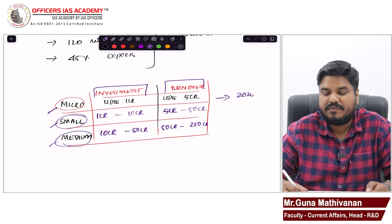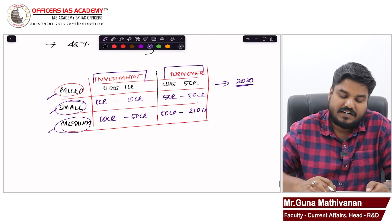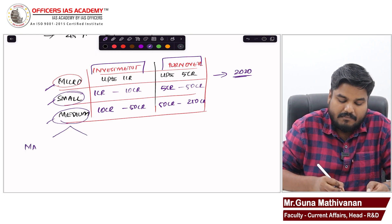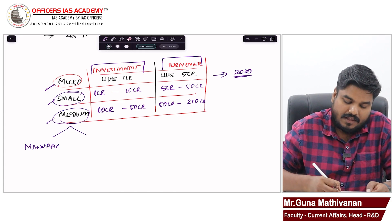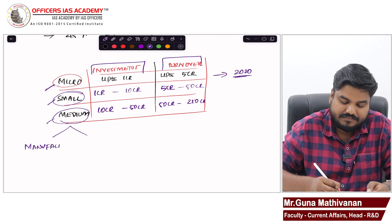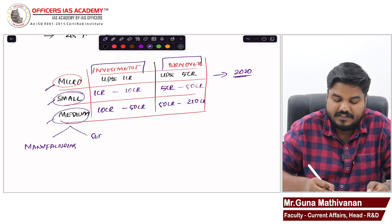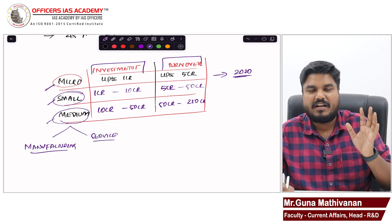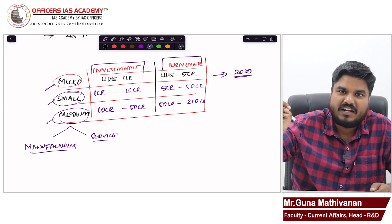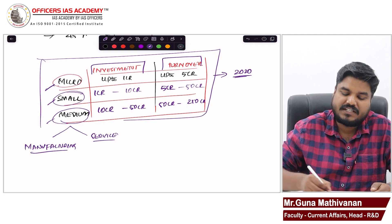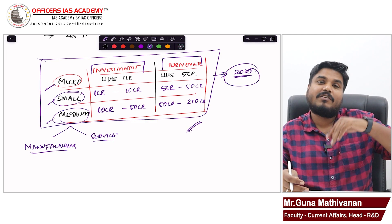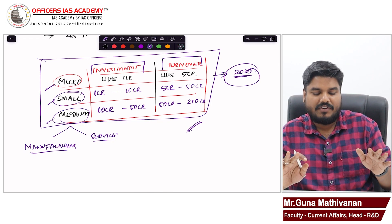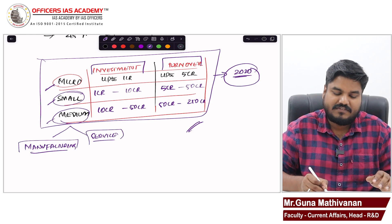This definition was introduced in 2020. This Micro, Small, Medium Enterprise definition is common for both manufacturing as well as the service sector. For manufacturing-based or service-based MSMEs, the classification is the same. But before 2020, manufacturing had a separate definition and service had a separate definition. Now we have the same definition for both manufacturing as well as the service sector.